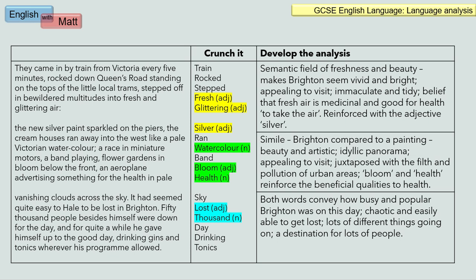The final paragraph: I've got here a trend in terms of how busy and popular Brighton was. We've got the adjective 'lost' — to be lost because of the amount of people there — but also the noun or statistic 'thousand,' suggesting it was very chaotic. It was crammed and rammed full of people, and in that kind of situation it's very easy to lose your bearings and get lost. There's also a sense of chaos; there are lots of different things going on, and it's a destination for lots of people wanting to experience lots of different activities. So this crunch activity groups words together and helps students look for patterns or semantic fields.